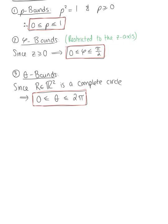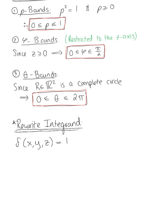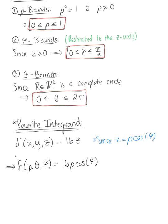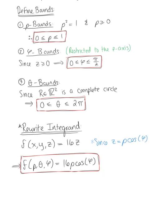The last thing we need to do to prepare is rewrite the integrand in terms of rho, theta, phi. We're given f(x, y, z) equals 16z. We'll note that since z in spherical coordinates is defined as rho cosine of phi, our function in terms of rho, theta, phi will be defined as 16 rho cosine of phi. So we have everything we need to set up the triple integral in spherical coordinates and evaluate.